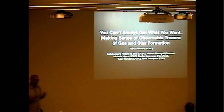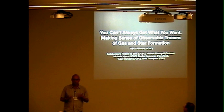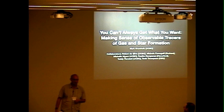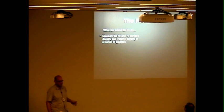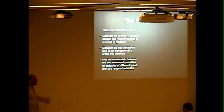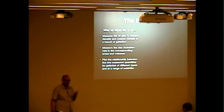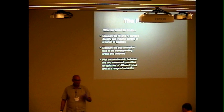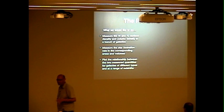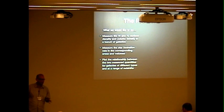In this talk, I'm going to try to talk about how do we make sense of the observables that we use to trace star formation. Here's the problem. What we would really like to be able to do is measure H1 and H2 surface densities and volume densities in a bunch of galaxies, measure the star formation rates in the corresponding areas or volumes, and plot the relationship between the two. In some sense, that's what the Kennicutt law is all about. But the problem is we really can't do that. What we can actually do is more like this.